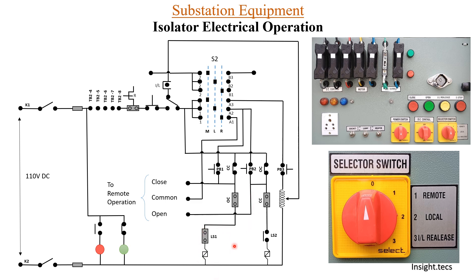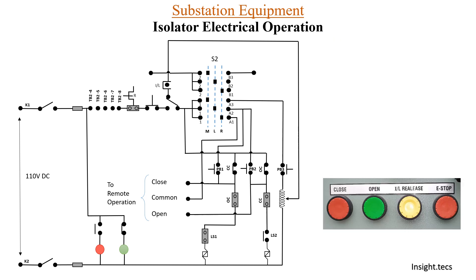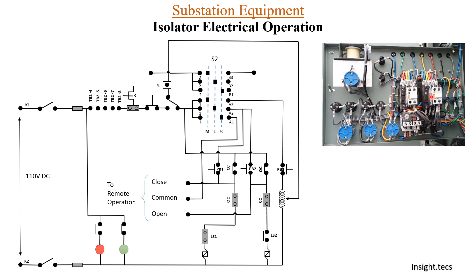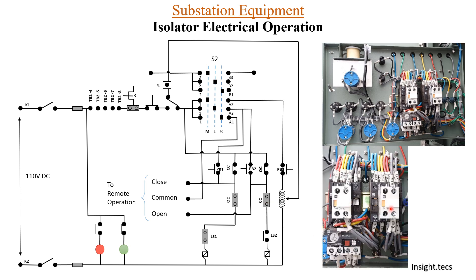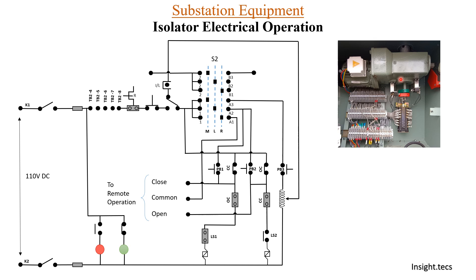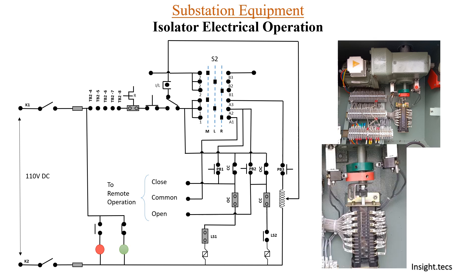Power then moves to LS1. CC and OC contactors each provide one NC contact in the circuit. When the motor starts rotating to close the isolator, once the isolator is completely closed, a limit switch (LS1) is pressed — this indicates the isolator is completely closed. Once the switch is released, the contactor opens and the motor stops rotating.